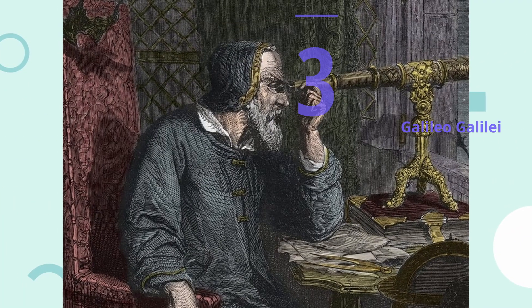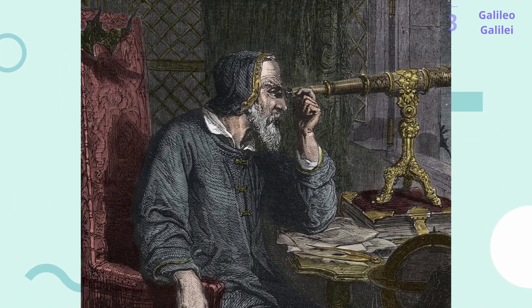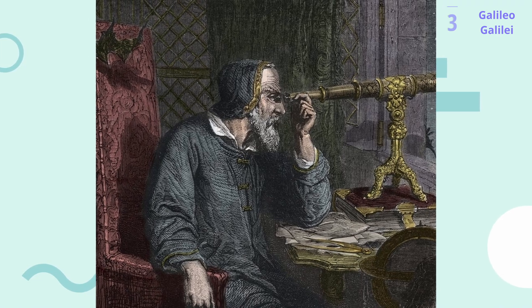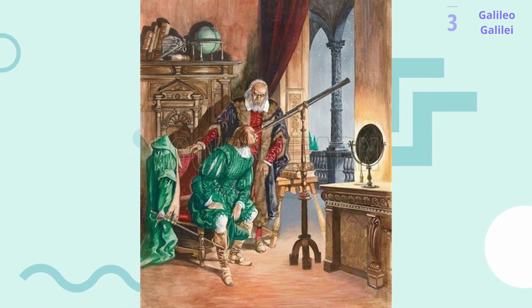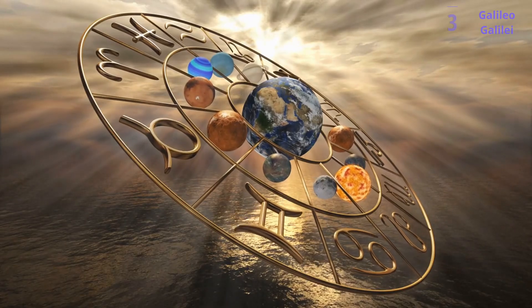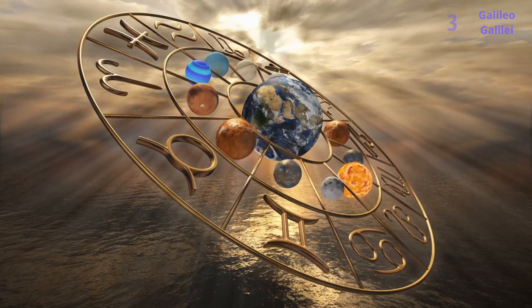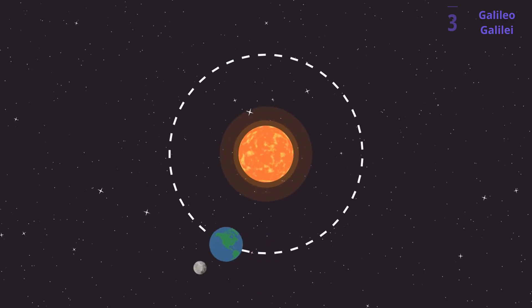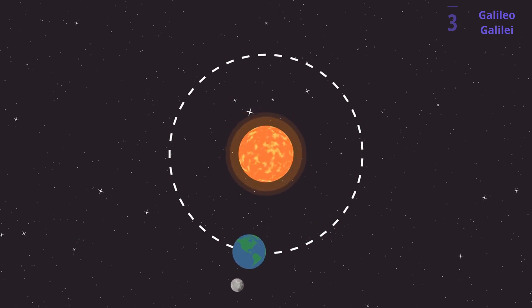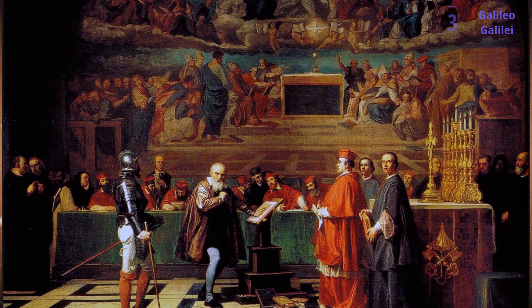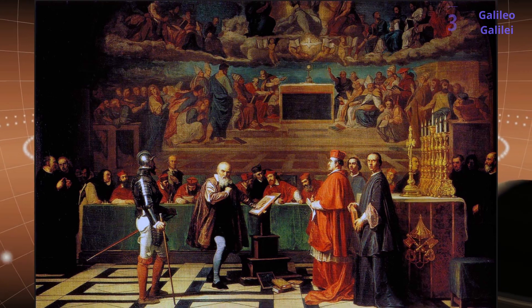Now time for the third spot, Galileo Galilei. Galileo Galilei deserves a spot on this list of top physicists for several reasons, even though his contributions extend beyond just physics. Before Galileo, the prevailing view was that Earth was the center of the universe. Galileo, through astronomical observations and logic, championed the heliocentric model, where the sun lies at the center of our solar system with Earth and other planets revolving around it. This challenged the established beliefs of the time and laid the foundation for modern astronomy.